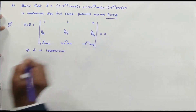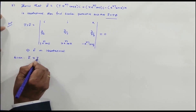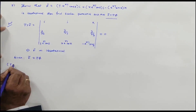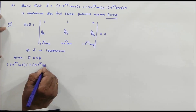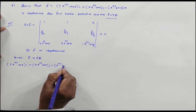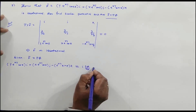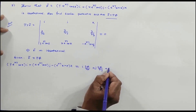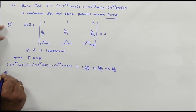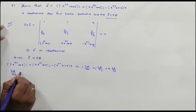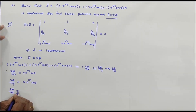For the scalar potential, let F̄ = ∇φ. Equating coefficients: ∂φ/∂x = ye^(xy)cosZ, ∂φ/∂y = xe^(xy)cosZ, and ∂φ/∂z = -e^(xy)sinZ. We integrate each equation with respect to its variable, keeping the others constant.